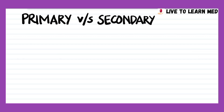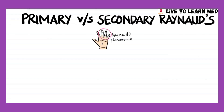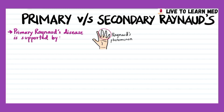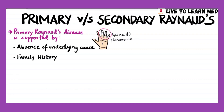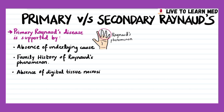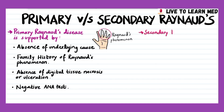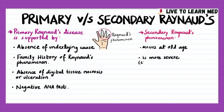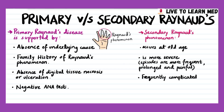Differentiating primary Raynaud's disease from secondary Raynaud's phenomenon can present a diagnostic challenge. Primary Raynaud's disease is supported by absence of an underlying cause, family history of Raynaud's phenomenon, absence of digital tissue necrosis or ulceration, and a negative ANA test. Secondary Raynaud's phenomenon occurs at an older age, is more severe, with more frequent, prolonged, and painful episodes, and is frequently complicated by ischemic digital ulcers and loss of digits.